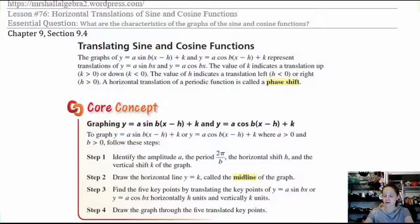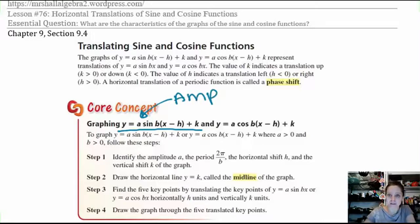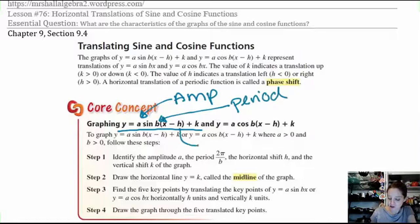To review the core concept from yesterday, we're going to look at how each variable affects the transformation of a sine function. A is a vertical stretch or shrink, and that's going to affect the amplitude of our function. B is a horizontal stretch or shrink, and that's going to affect the period. H is a horizontal shift left or right, and K is a vertical shift.